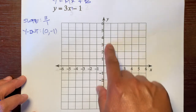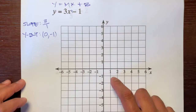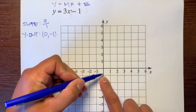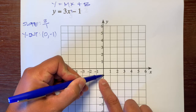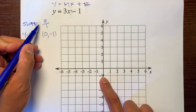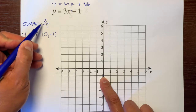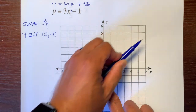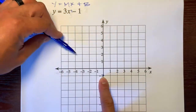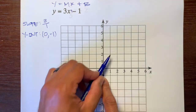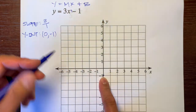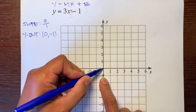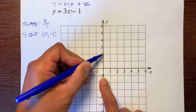Let's graph this. We start at the origin (0, 0) and go to our Y-intercept at (0, negative 1). Since our slope is positive, our line goes uphill. We rise 3 — 1, 2, 3 — and run 1 to the right. We can also go backwards from the starting point: down 3 and left 1.